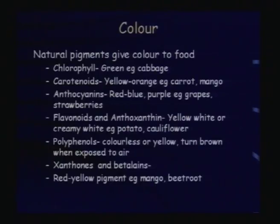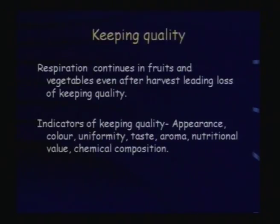Foods have different colors due to natural pigments. Chlorophyll is responsible for green color; anthocyanins for red and blue color in grapes and strawberries; polyphenols are present in apples and brinjal. When an apple is cut, it turns brown because polyphenols are oxidized in the presence of oxygen. Keeping quality is important to determine storage period. Indicators of keeping quality include appearance, color, uniformity, and taste.